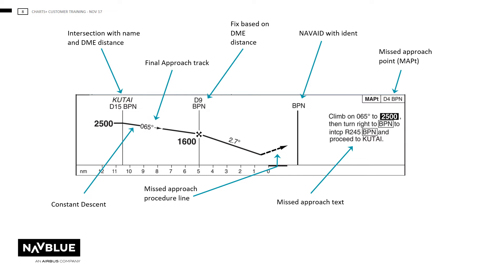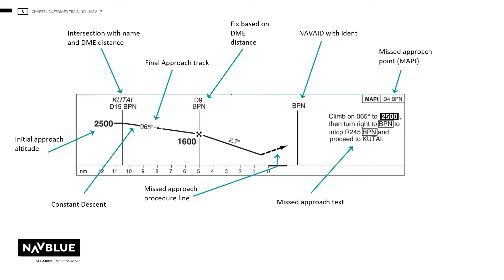NAVBLUE do not show step downs; they show a constant descent profile. Should a VDP — visual descent point — be defined, NAVBLUE will show the VDP with a symbol and the applicable distance.